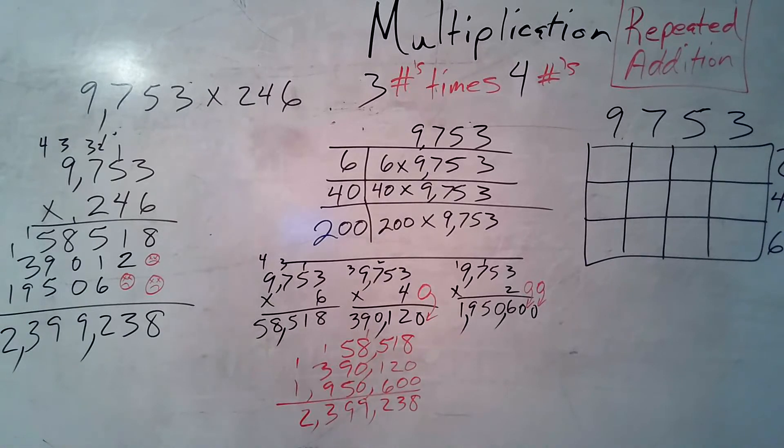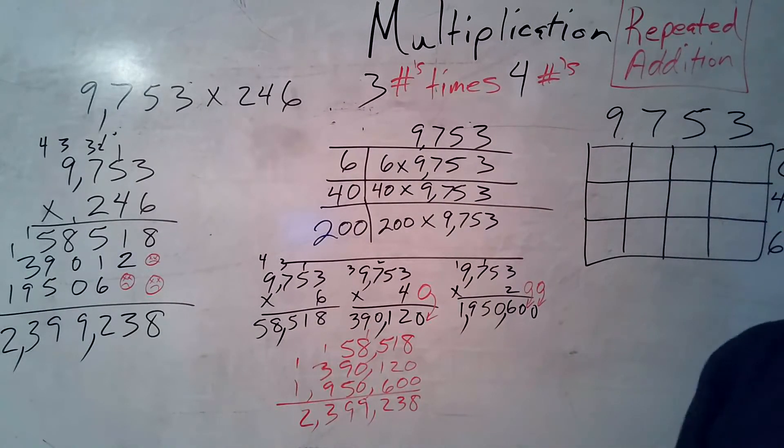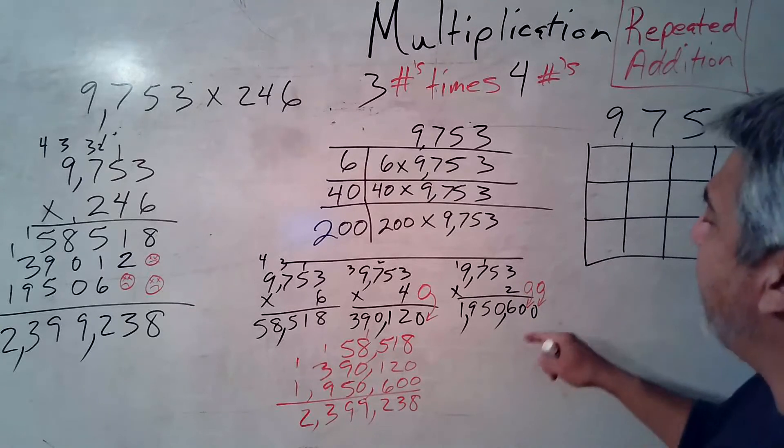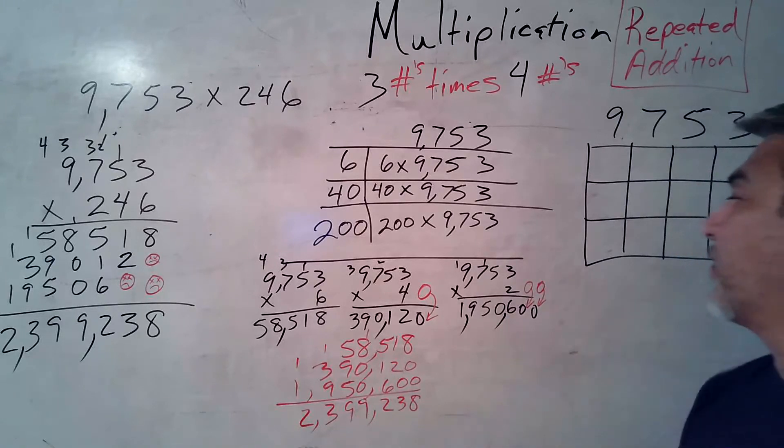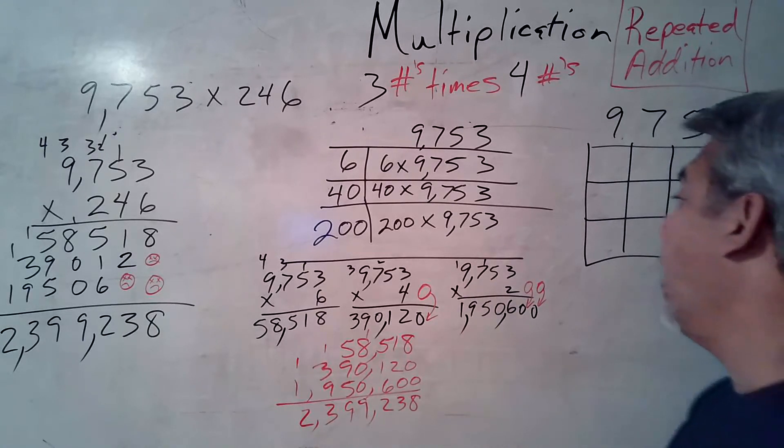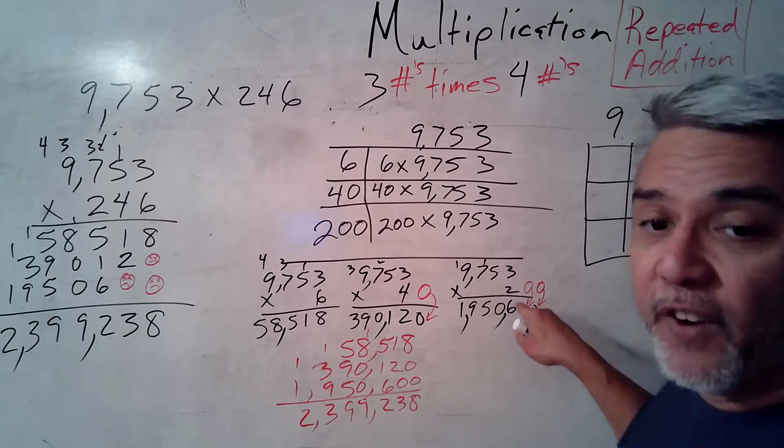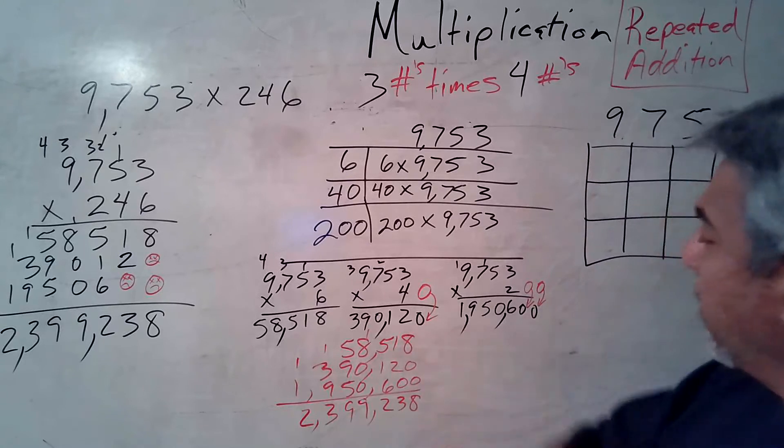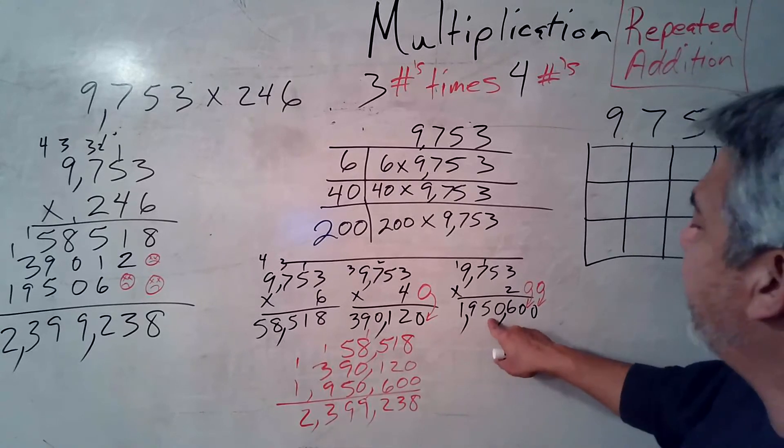But wait. There's more! Yep. That's right. I'm going to take this 9,753 and I'm going to multiply it by 200. But wait. What? Yes. I broke off the two 0's. So, I'm just going to multiply it by 2. And when I multiply it by 2, 2 times 3 is 6. 2 times 5 is 10. Write down the 0. Carry the 1. 2 times 7 is 14. Plus 1 is 15. Write down the 5. Carry the 1. 2 times 9 is 18. Plus 1 is 19. So, add that up. But hold up. Don't forget your other two 0's because we're multiplying it by 200. So, when you bring those two 0's to the party, you get 1,950,600.